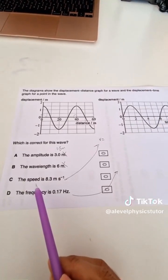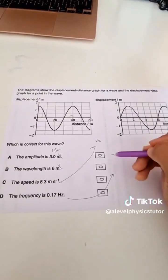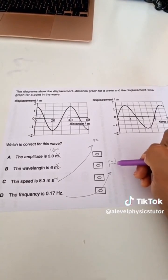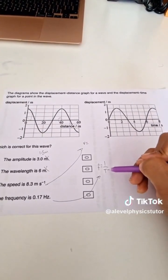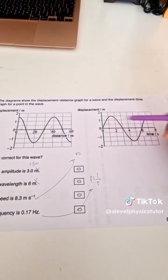Let's look at part G first because that's going to help with part C. For the frequency, we use the fact that frequency is 1 over time period.